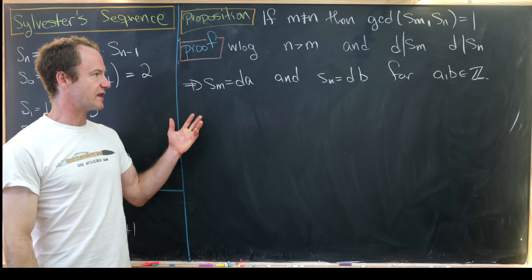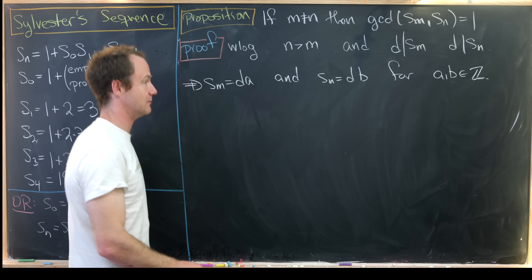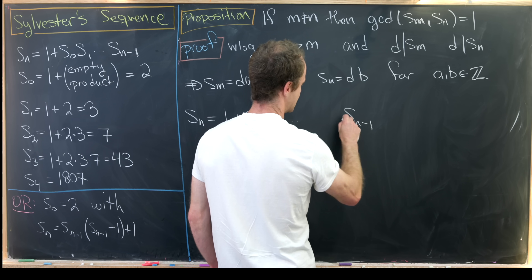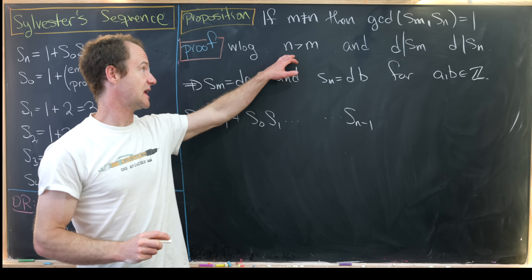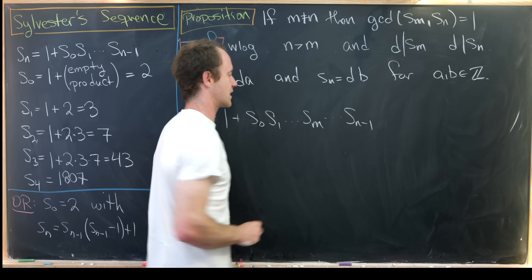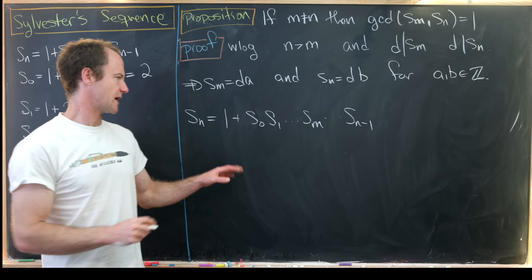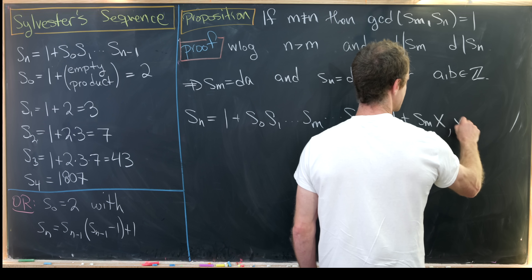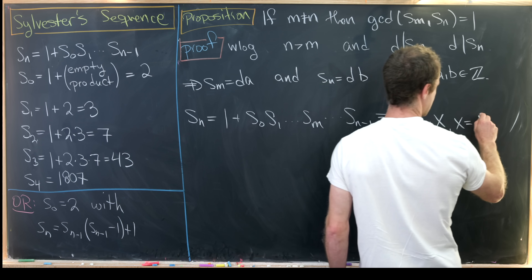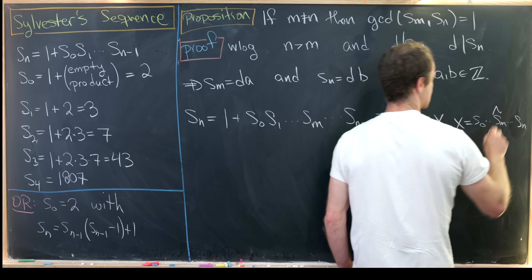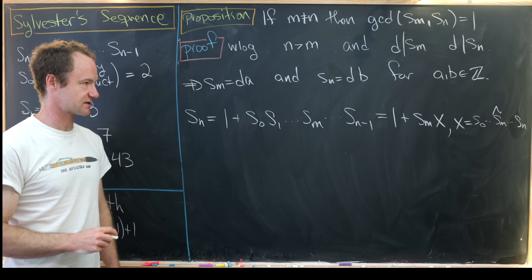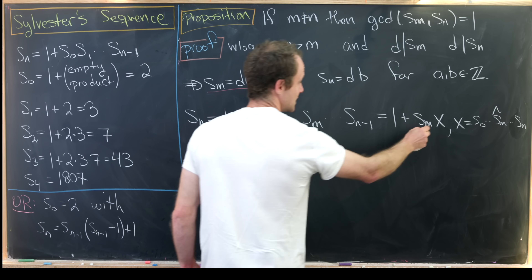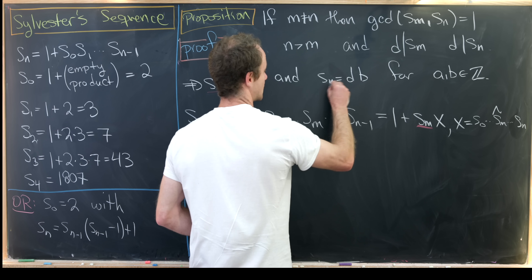From here we'd like to use our recursion to write S_n in terms of S_m. We can write S_n as one plus S₀ times S₁ all the way up to S_{n-1}. Since n is bigger than m, somewhere along this product we hit S_m — that's the key to this whole thing. So this becomes one plus x times S_m, where x is the product of the rest of those terms.